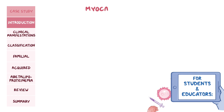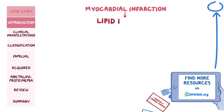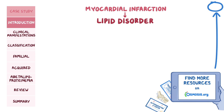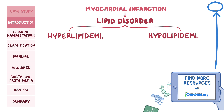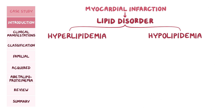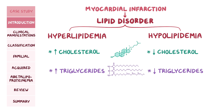Jamie had a myocardial infarction which was caused by an underlying lipid disorder. Lipid disorders include both hyper and hypolipidemia. Hyperlipidemia can manifest as a high level of cholesterol, a high level of triglycerides, or a combination of both. Hypolipidemia is the opposite, where there is a low level of these lipids.